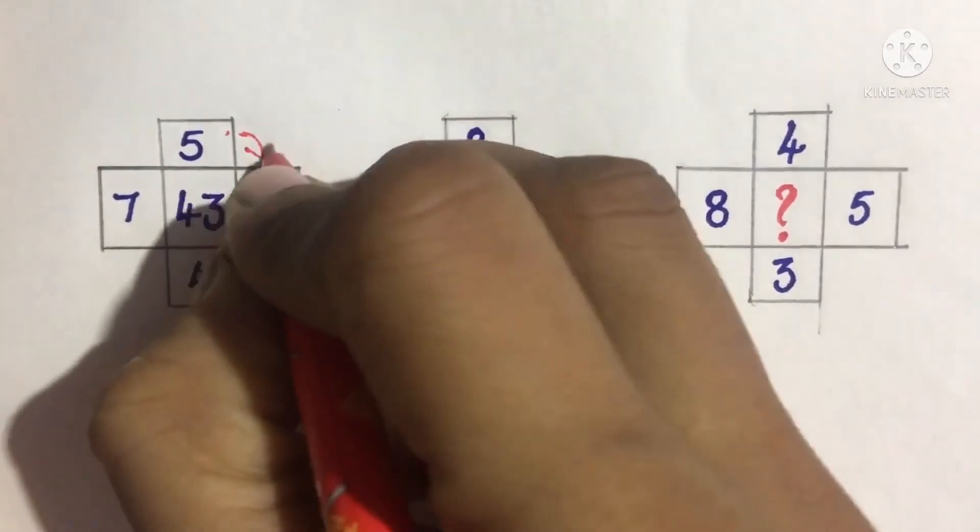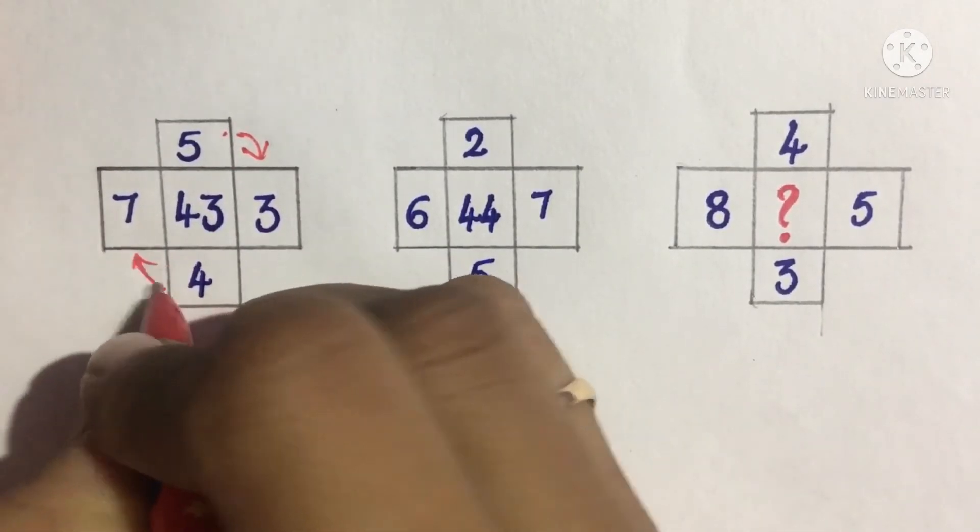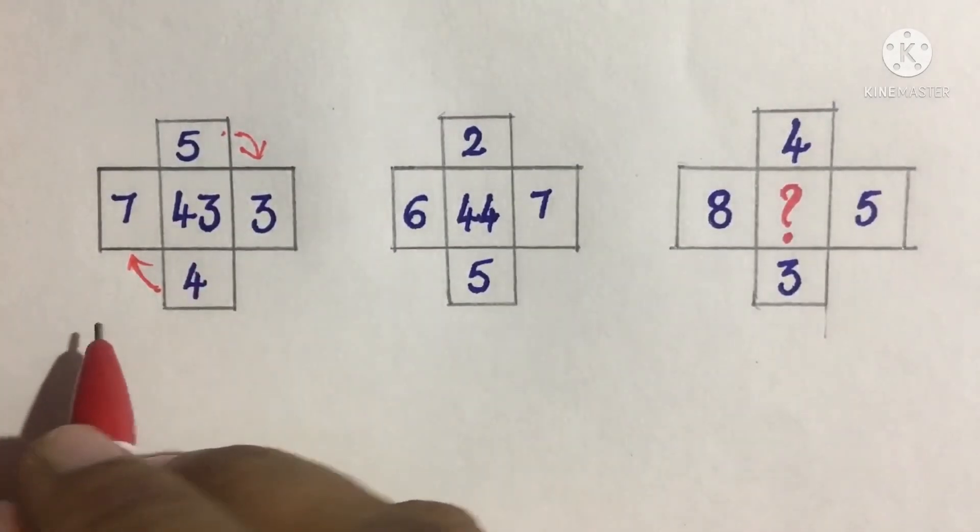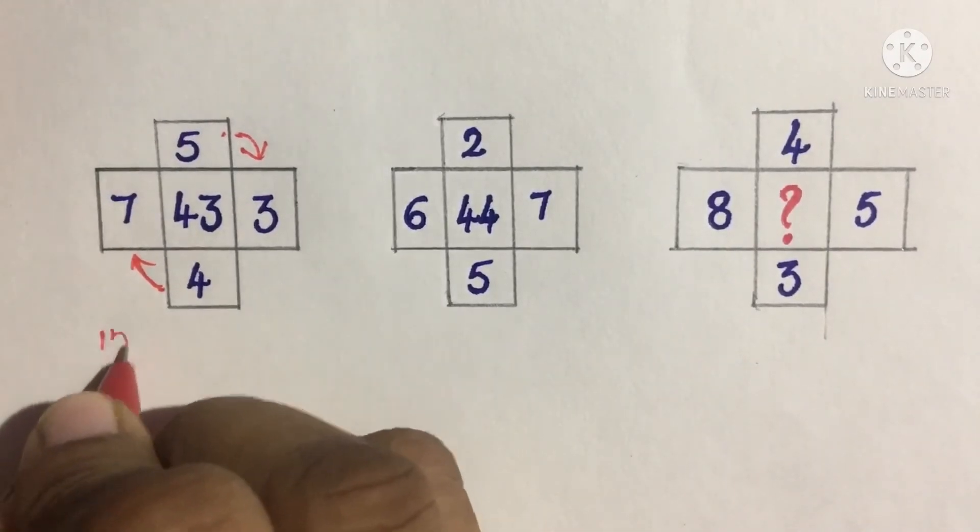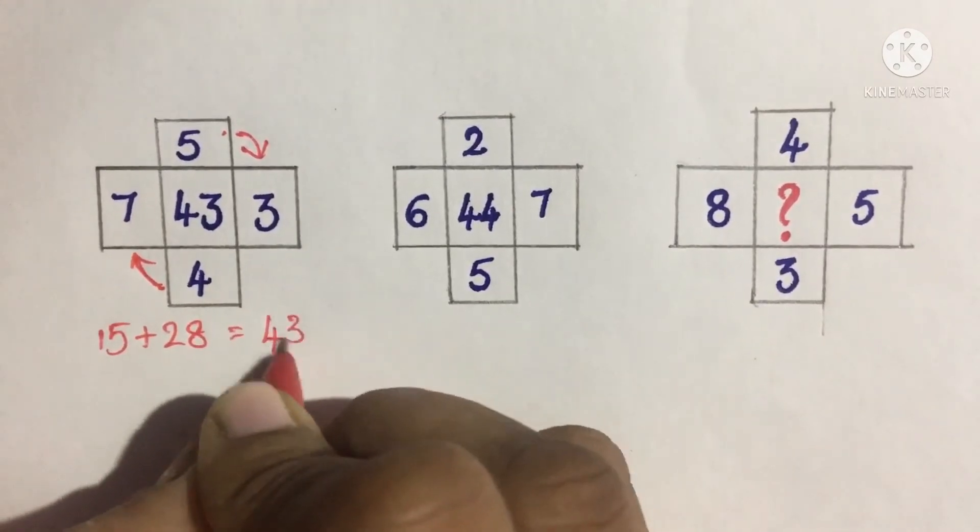Here we can see how the trick is done. Here, 5 times 3 is 15. Then 7 times 4 is 28. Adding these together, 15 plus 28 equals 43.